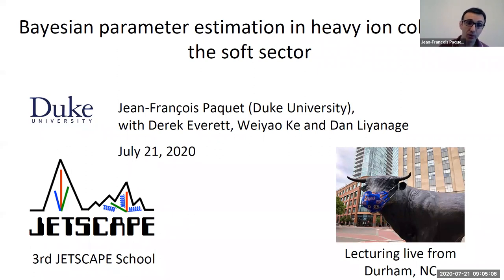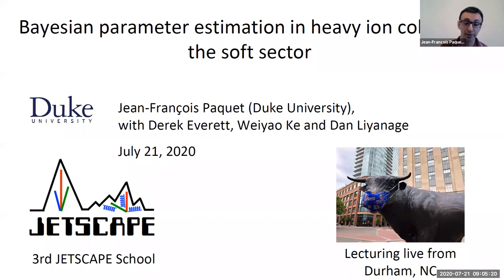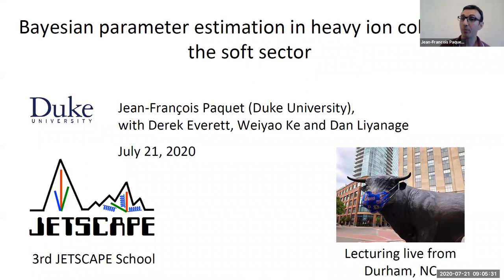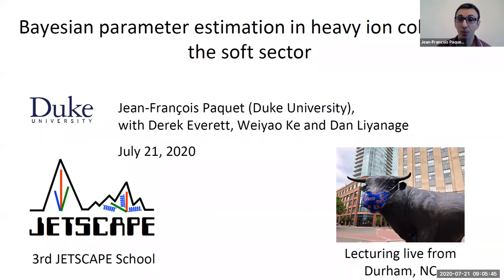Bayesian parameter estimation is a tool that allows you to systematically compare the output of your model with data. The lecture is structured in a relatively model-agnostic way — I will not assume the model you want to compare is the Jetscape framework, although it can certainly be used with Jetscape. We've been using it within Jetscape, and several papers using Bayesian parameter estimation to compare Jetscape with data will come out in the coming weeks or months. The presentation today will be generic and applicable for any model-to-data comparison.